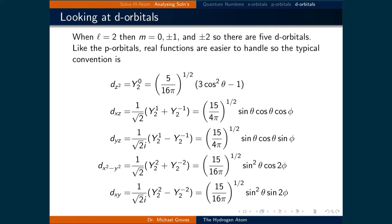The other 4 come from linear combinations of the m is equal to plus or minus 1 states, and the m is equal to plus or minus 2 states.